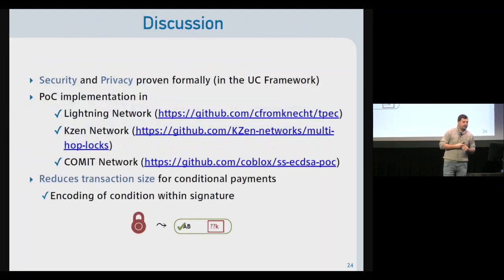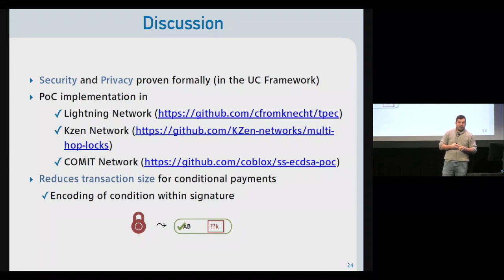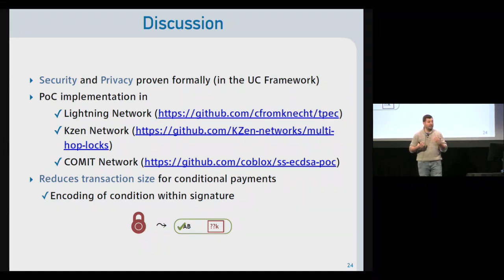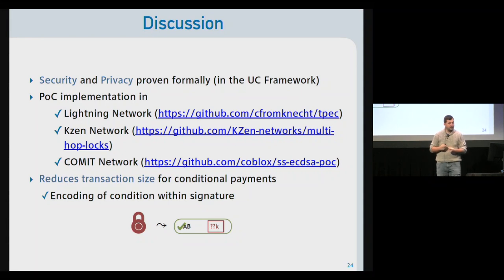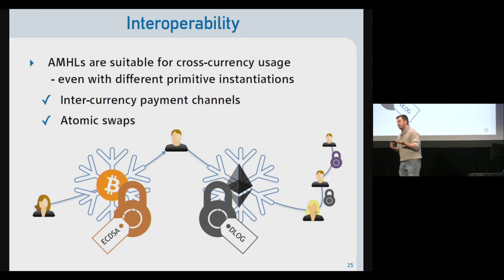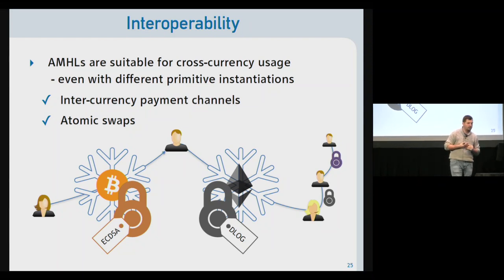We proved that this achieves our security and privacy notions in the Universal Composability framework. The community has done proof-of-concept implementations in the Lightning Network, Celer network, and Connext network. Our protocol also has practical advantages: it reduces transaction size for conditional payments by encoding the condition in the signature itself, requiring only digital signature verification. Most interestingly, our construction allows interoperable multi-hop payments — a path where one lock is Bitcoin/ECDSA-based and the next is Ethereum-based can still complete a payment from sender to receiver with security and privacy.